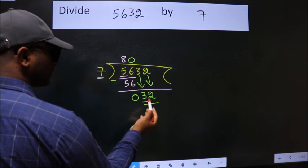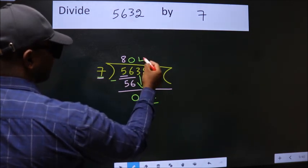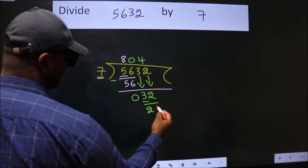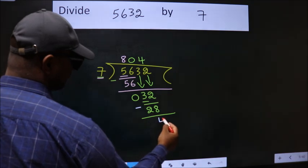So, 32. A number close to 32 in the 7 table is 7 times 4 is 28. Now we subtract. We get 4.